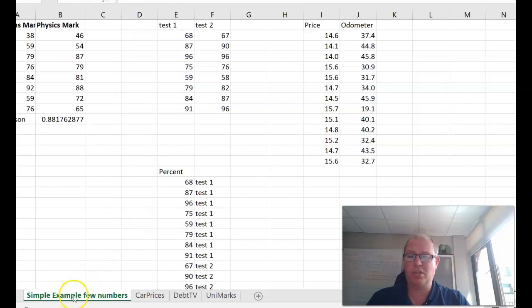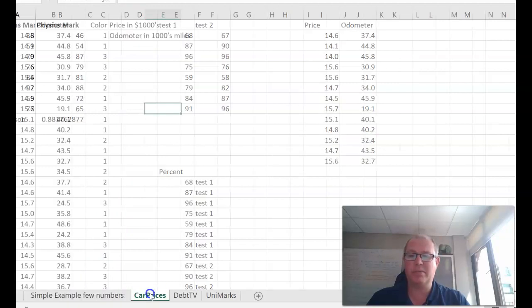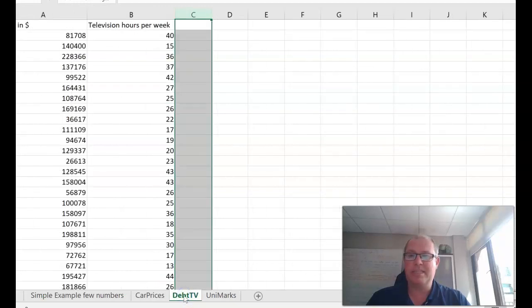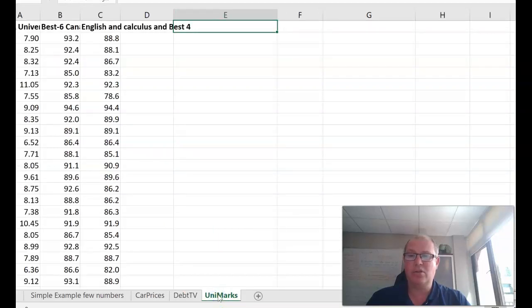Once you've opened this spreadsheet you'll notice there are four sheets at the bottom: simple example few numbers, car prices with lots of prices of cars and their mileage, debt in dollars and how much TV hours that family watches in a week, and also university marks - students' real grades GPA at university and what they got at high school, their best six Canadian courses like English and calculus and vectors.